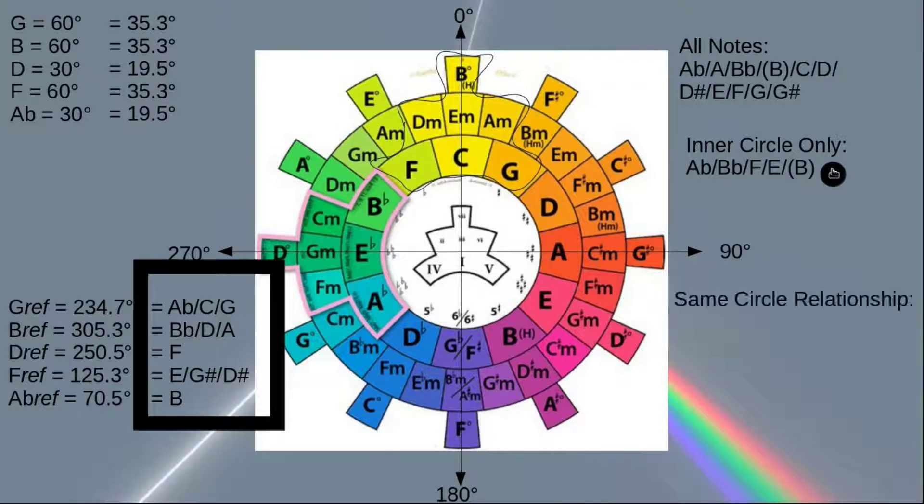If we use the same circle relationship, meaning if it's on the inner ring in our key, then we also use the refracted note from the inner ring, the middle ring stays in the middle, etc. Then we get A-flat, A, F, and E, which sounds like this.